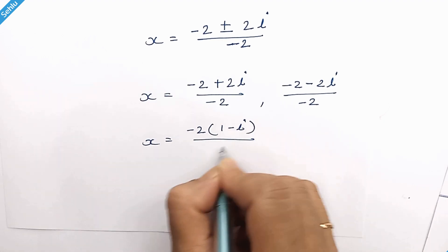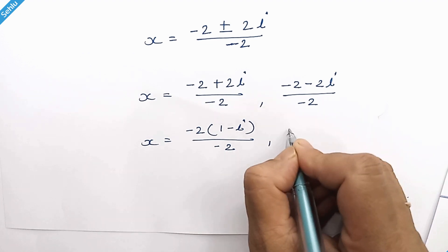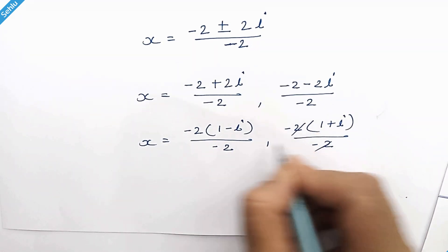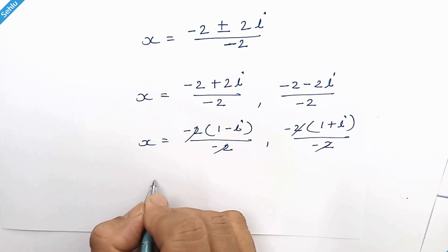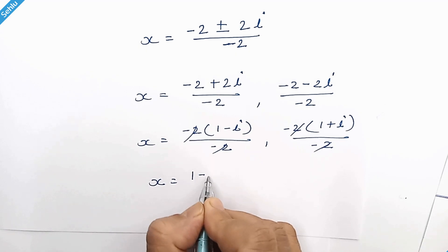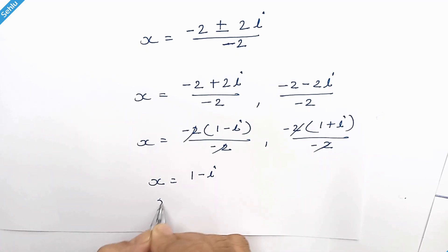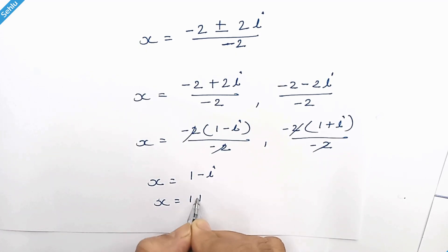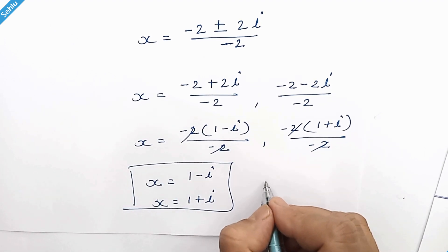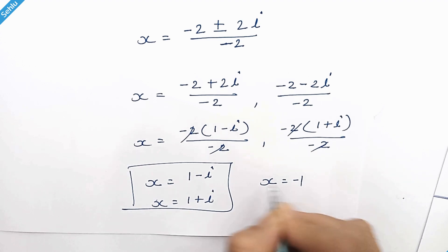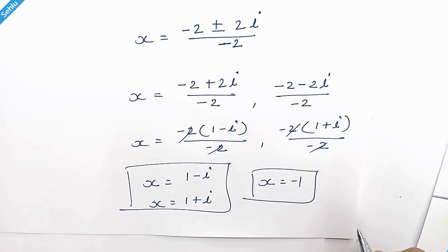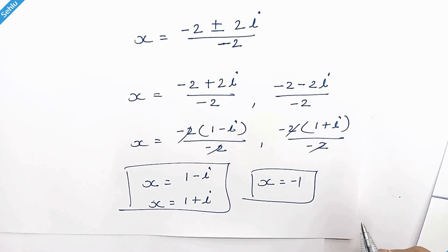The 2s cancel out, so we have x equals 1 minus iota and x equals 1 plus iota. These two are complex answers, and x equals negative 1 is the real answer. Thanks for watching, don't forget to subscribe — we will meet in the next one, bye bye.